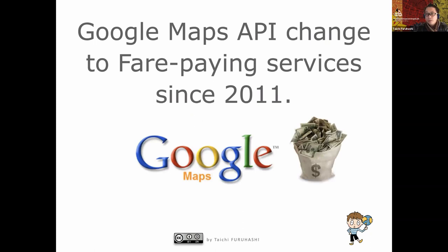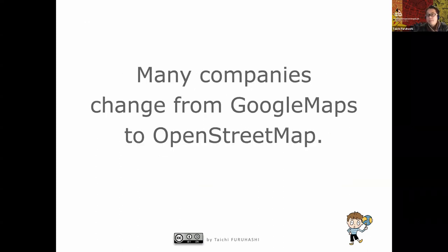Google Maps' first version was totally free, but they changed the free model to a business model. In 2011, Google Maps API changed to a purchasing model. Since then, many companies have changed from Google Maps to OpenStreetMap.